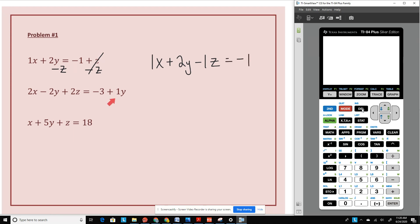My second equation, I have to get rid of this positive 1y here. So I'm going to subtract 1y from both sides. I then get 2x minus 3y plus 2z equals negative 3. My third equation is already written in standard form.